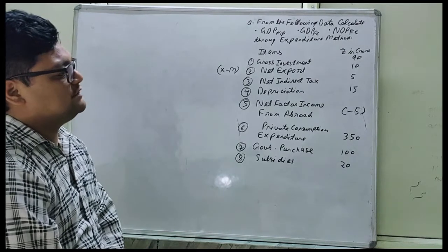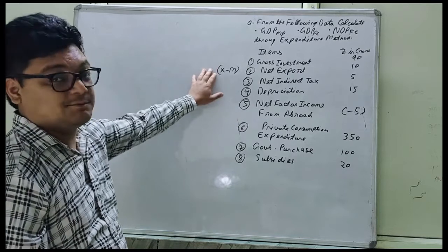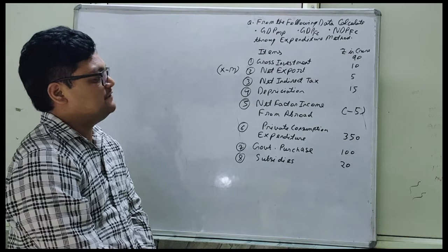Items given: gross investment 90, net export (export minus import) 10, net indirect tax 5, depreciation 50.